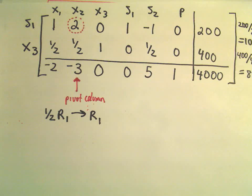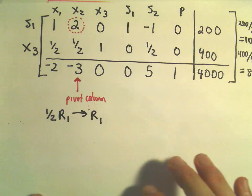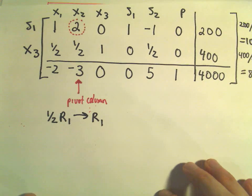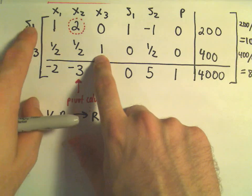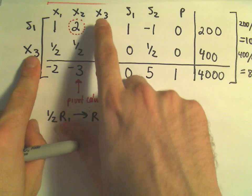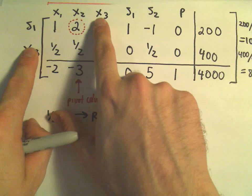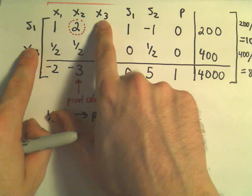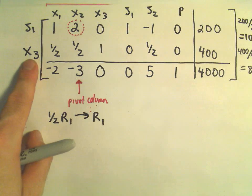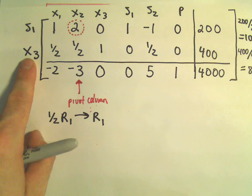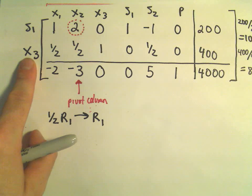This is the next part of my simplex method video. One thing I left out in the first part when we did our row reduction: originally we had S1 and S2, and S sub 2 has to get replaced with a variable from the corresponding column. So I've done that — my S2 is now turned into an X sub 3. Definitely make note of that.